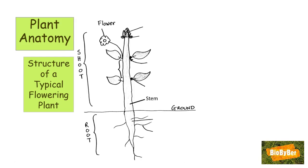Another organ is the stem. A third organ is the leaves — they carry out photosynthesis, as we already know. The fourth type of organ is the buds. There are different types: the terminal bud, also called the apical bud, which is found at the end of the shoot.